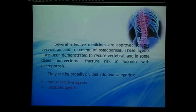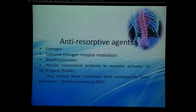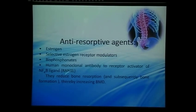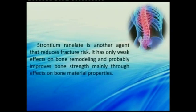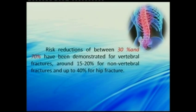Medications are broadly divided into antiresorptive and anabolic agents. You are familiar with estrogen, selective estrogen receptor modulators, bisphosphonates, and the newer denosumab. They all reduce bone resorption and eventually reduce bone formation, thereby increasing BMD. Anabolic agents include PTH (Forteo), which stimulates bone formation but also stimulates bone resorption. Strontium ranelate is another drug available — not FDA approved but commonly used in Europe. It doesn't act on the remodeling process but strengthens bone tissue, thereby reducing vertebral fracture.